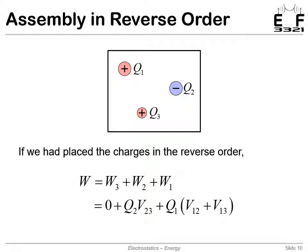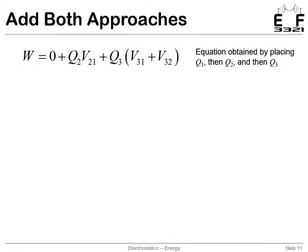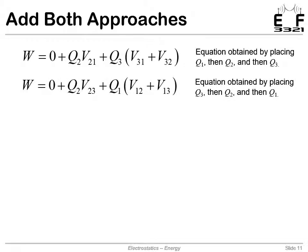Now suppose we did the exact same thing but in reverse order. We bring in the third charge first, the second charge second, and the first charge last. We would get the exact same expression, just swap the indices one and three. What we'd like to do now is add these approaches. This is the expression when we added charge one, then charge two and charge three. We then did it the other way around and got a different expression. We placed charge three, then charge two, then charge one. Now we'll add these equations together.